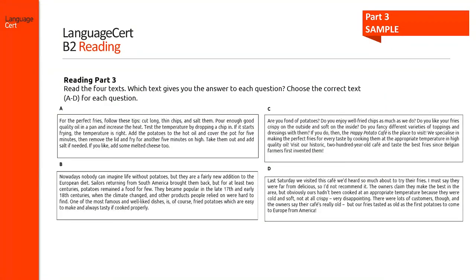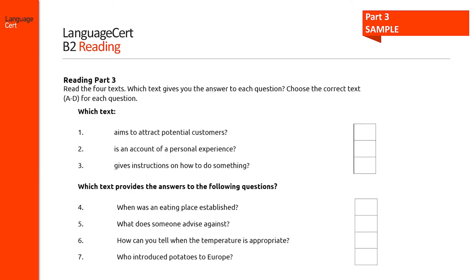This task is representative of Part 3, which presents candidates with four short texts and asks them to display their understanding of the purpose of each text and locate specific information. They need to answer seven questions to indicate which text provides the answer to each question. This is a matching task, which are on the next slide. And here are the seven questions related to the four texts provided in Part 3, which were on the previous slide.